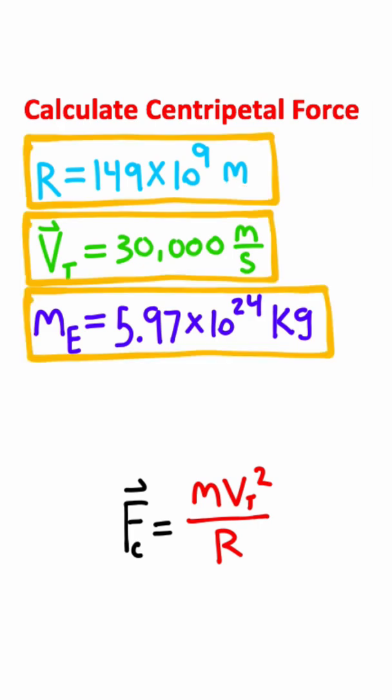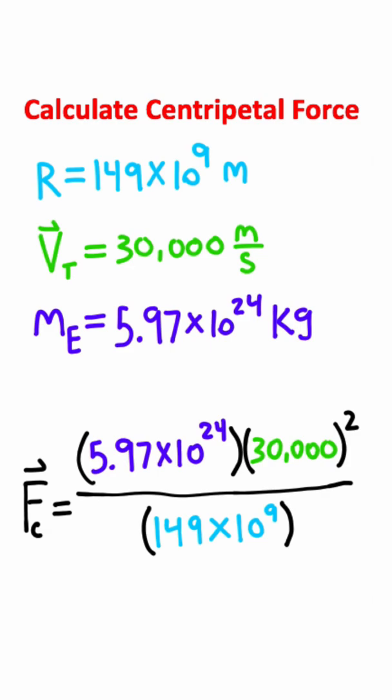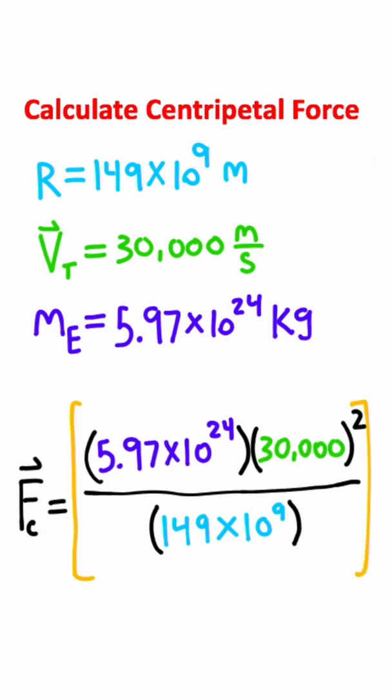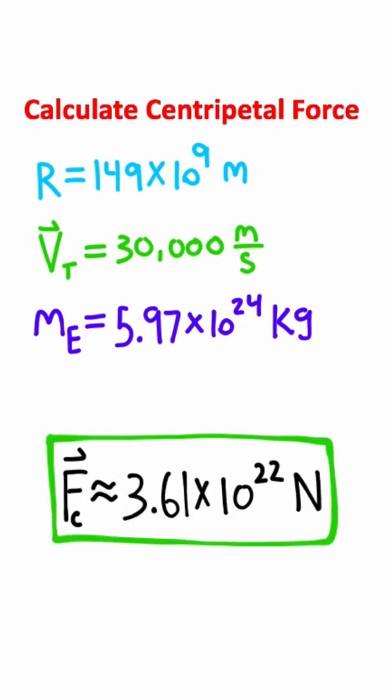We have everything in the right units here, so we can take all these values and plug them into the equation. Now all you need to do is evaluate this fraction. If you do this on a calculator, you should get approximately 3.61 times 10 to the 22nd Newtons. So that is approximately the centripetal force that acts on the Earth.